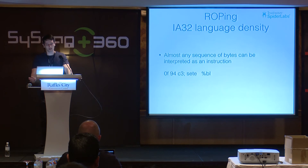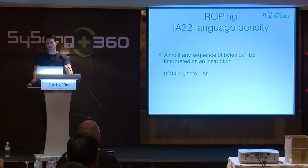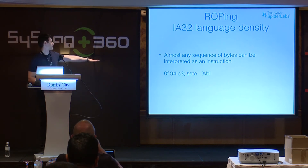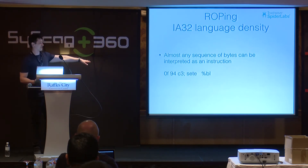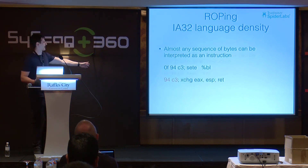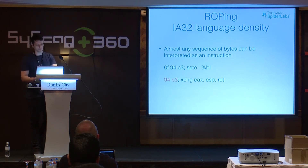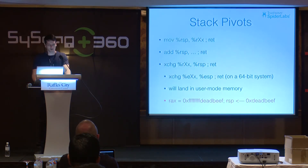This is the reason to use ROPgadget — x86 instruction density. The x86 instruction set is so large that any sequence of bytes can be interpreted as a valid instruction. For example, take the bytes 0F 94 C3 — not a very useful gadget. But with offset of 1, this becomes 94 C3, which is an XCHG instruction — a stack pivot typically used in ROP. That's why you have to use a proper tool.